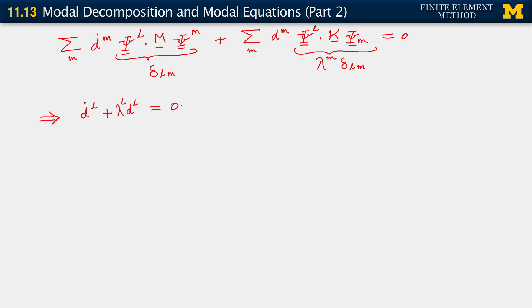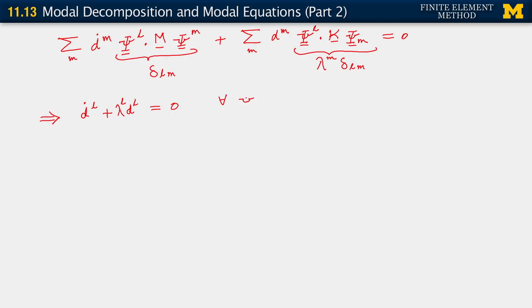This came about just by applying the properties of the Kronecker delta and using that sum over m. We did this for an arbitrary mode, an arbitrary eigenvector psi_l. So this holds for all l equals 1 to NDF. This is what we will call our single degree of freedom modal equation. It reduces to a really simple form.